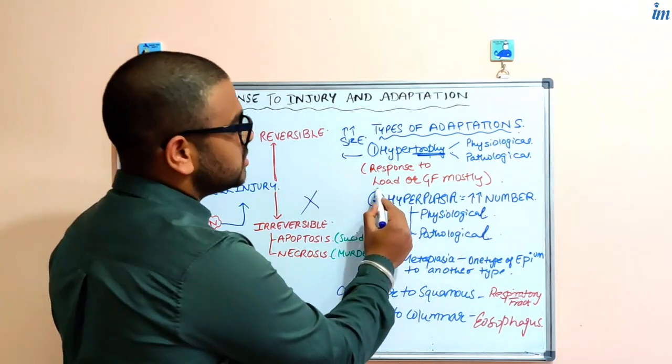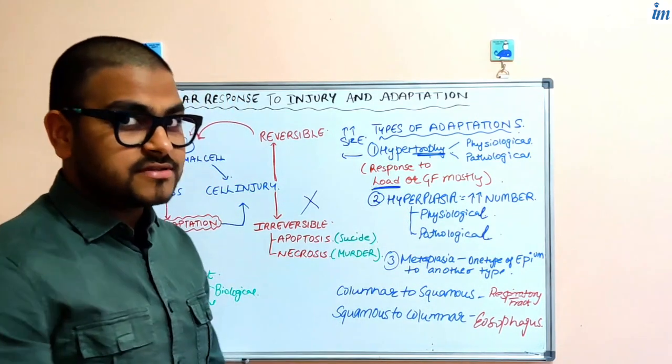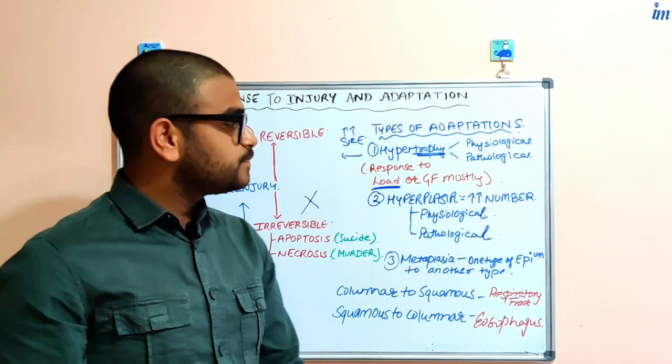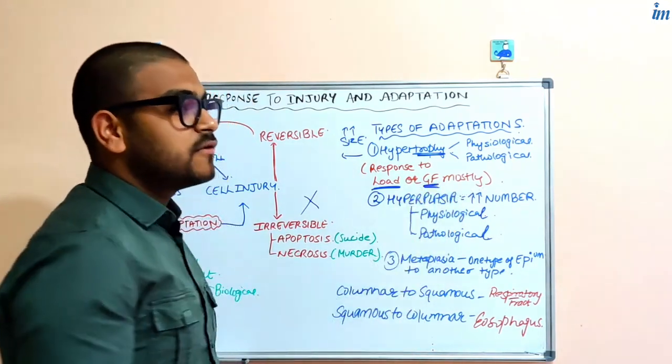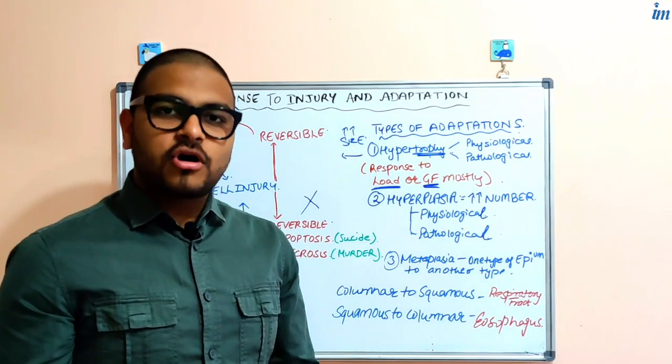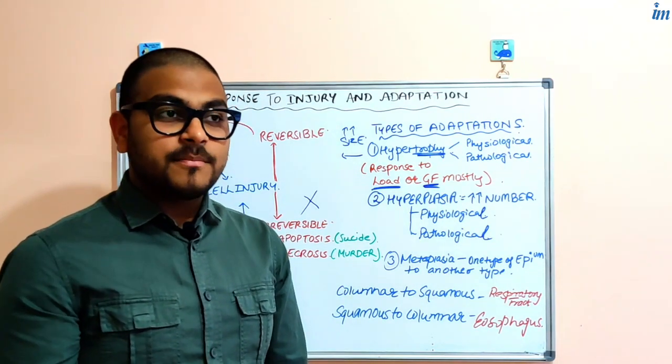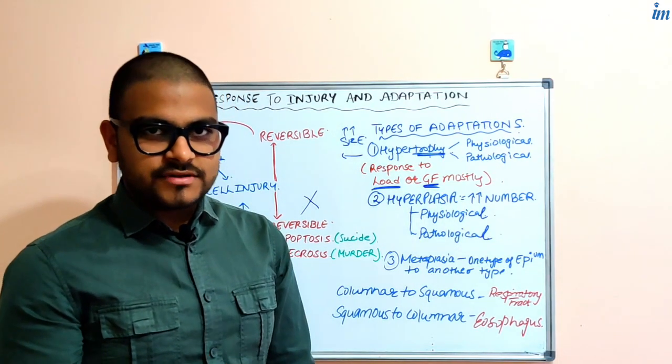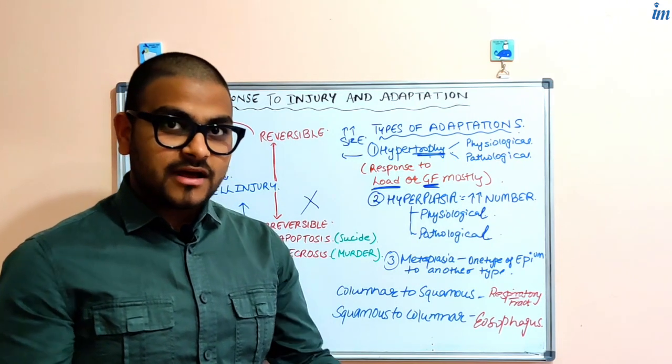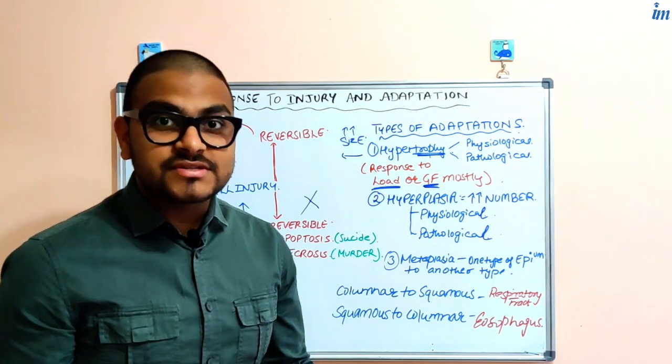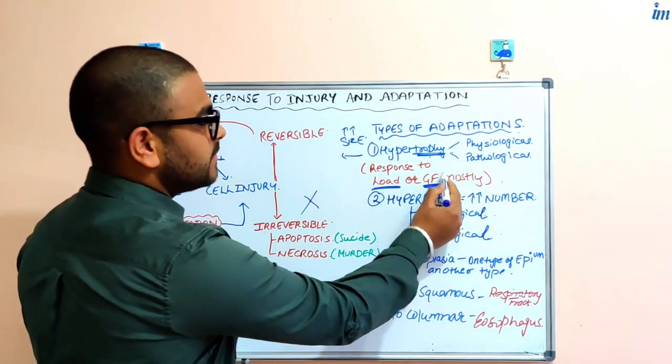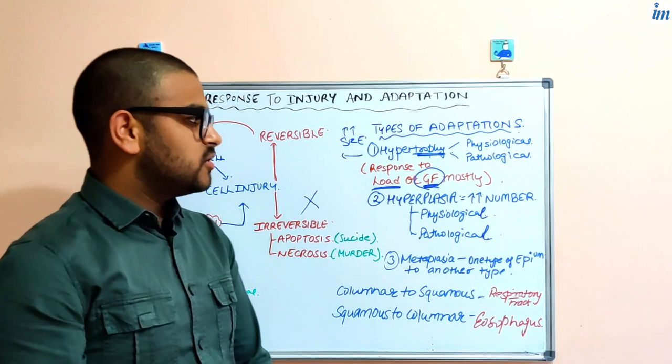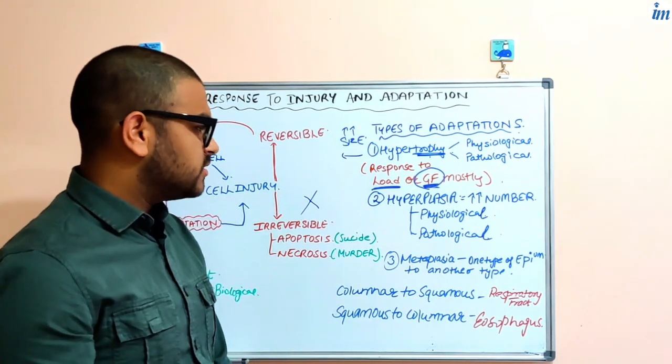As I have discussed, it is mostly in response to loads. It can also be due to influences of some growth factors or hormones. For example, the breast and the uterus lining also enlarges in situations such as pregnancy. So it is an example in which hypertrophy is because of influence of growth hormones and growth factors.